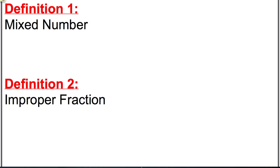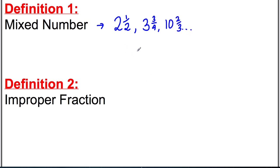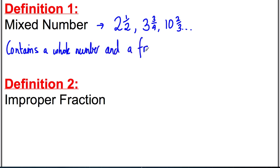Definition one: a mixed number. A mixed number is something like two and a half, three and three quarters, and ten and two-thirds, and so on. A mixed number contains a whole number and a fraction, as these examples above do.